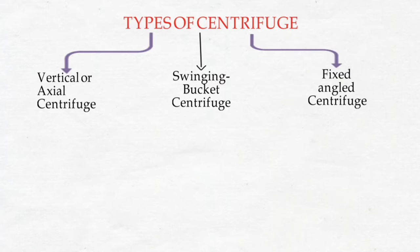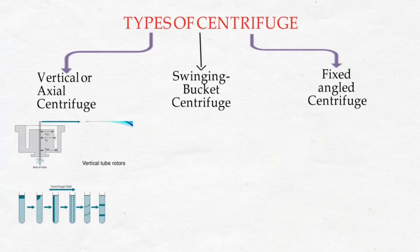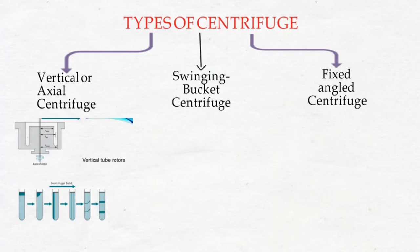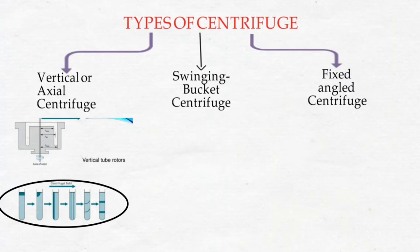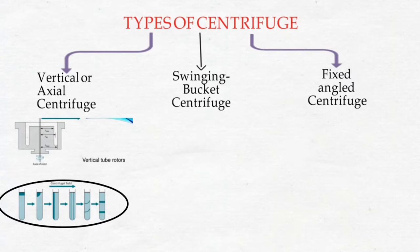In a vertical centrifuge, tubes are placed vertically and particles move a short distance, so the time of separation is shorter. However, the main disadvantage is that the pellet may fall back into the solution at the end of centrifugation.